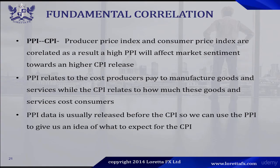Now, fundamental correlation — we're focusing on the PPI and the CPI. The PPI, which is the Producer Price Index, and the CPI, which is the Consumer Price Index, are correlated. The PPI relates to the cost producers pay to manufacture goods and services, while the CPI relates to how much these goods and services cost consumers. So if producers are paying more to manufacture goods and services, they will charge more, and consumers will have to pay more. You can see how the PPI and the CPI have a direct correlation.